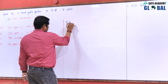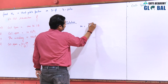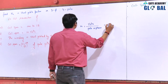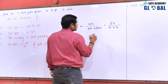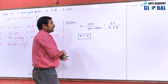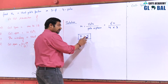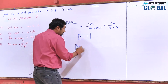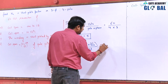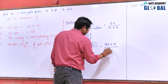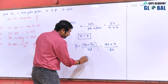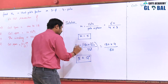Slot angle β = 180 × poles / slots = 180 × 4 / 60 = 12 degrees. The coil span is 1 to 12 slots, meaning the difference is 11 slots. So the coil pitch in degrees = 11 × 12 = 132 degrees. The cording angle α = 180 − 132 = 48 degrees. Therefore, K_c = cos(α/2) = cos(24°) = 0.9135.